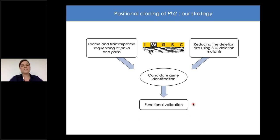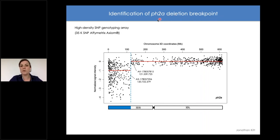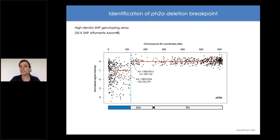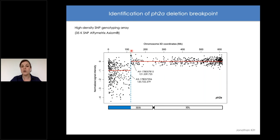The first thing we did was precisely identify the deletion breakpoints within the PH2a mutant. We genotyped the PH2a mutant using a high-density SNP array developed at the GDEC institute, normalizing signal intensities for each marker using the Chinese Spring reference. Using scripts developed by Jonathan Kitt, we were able to precisely detect the deletion on chromosome 3D. The PH2a mutant has a long terminal deletion, with the breakpoint at approximately 121 megabases — longer than previously estimated.